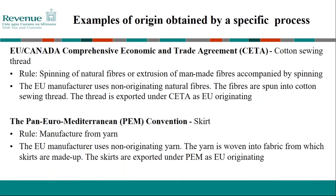Looking at examples by specific free trade agreement: under the EU-Canada free trade agreement CETA, an EU manufacturer uses non-originating natural fibers, which are spun into cotton sewing thread, and that thread is exported as EU originating. Under the PEM convention, a skirt created from non-originating yarn is woven into fabric from which the skirts are made, and then exported as EU originating. You can see how the specific process can allow you to qualify goods as EU originating.